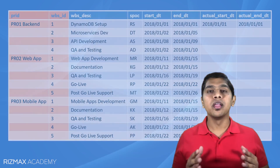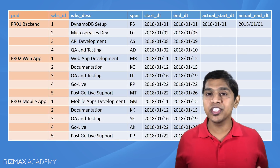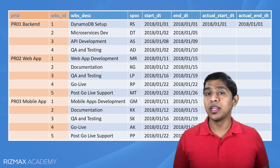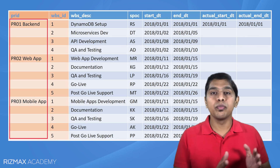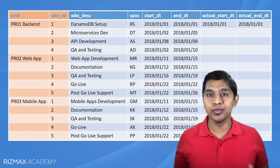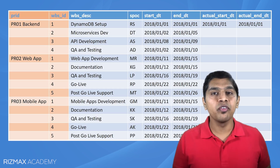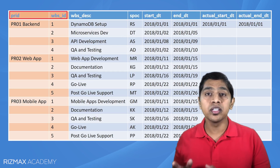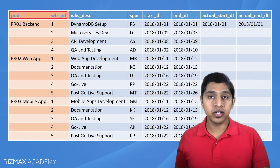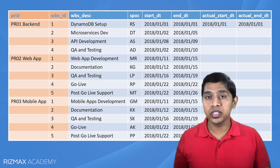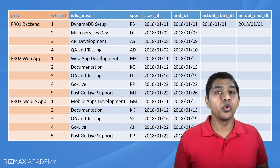As part of our hands-on exercise, we are going to create a DynamoDB table to store information about projects in a project management system. Let's say we are creating a serverless application with three projects: back-end development, web application development, and mobile app development. This table will have a primary key composed of a partition key and a sort key — the partition key will be a project ID and the sort key will be a WBS ID.